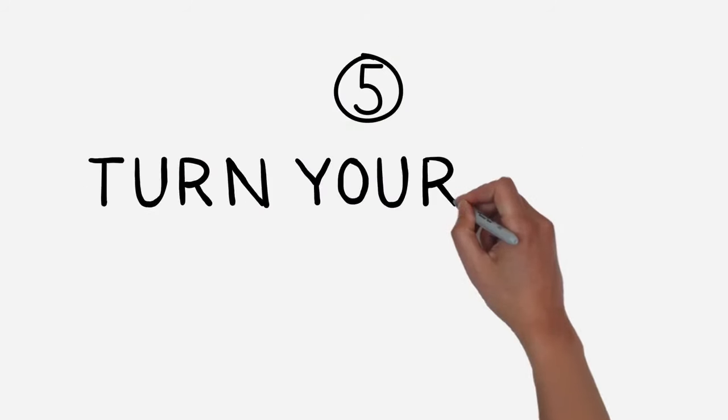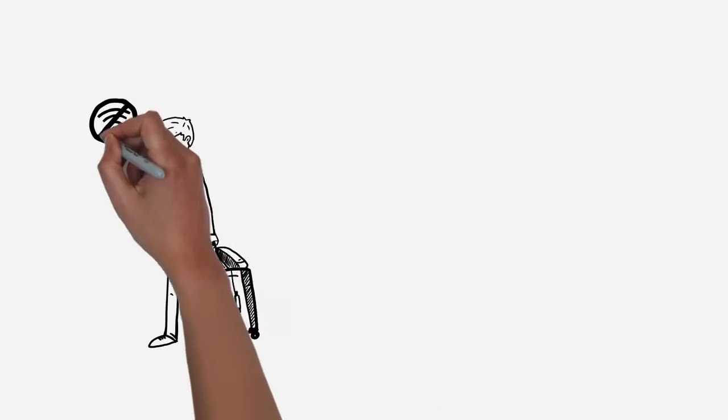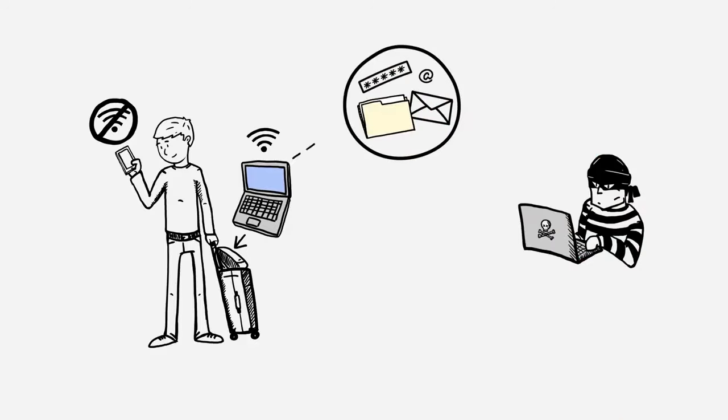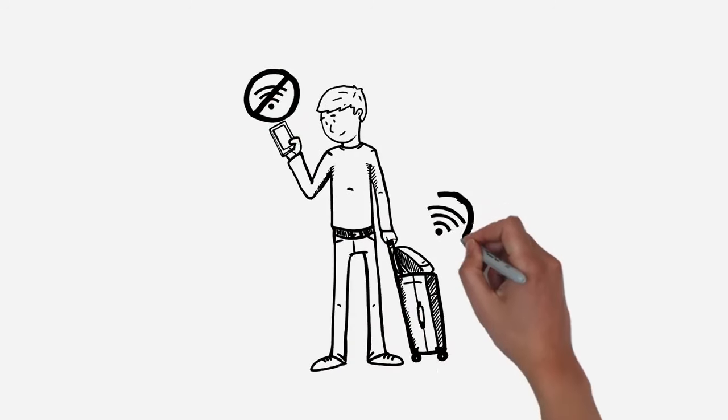5. Turn your Wi-Fi off when you're done. Even if you haven't actively connected to a network, the Wi-Fi hardware in your computer can still be transmitting data with any network in range. If you are through using the Internet, ensure that your Wi-Fi is turned off.